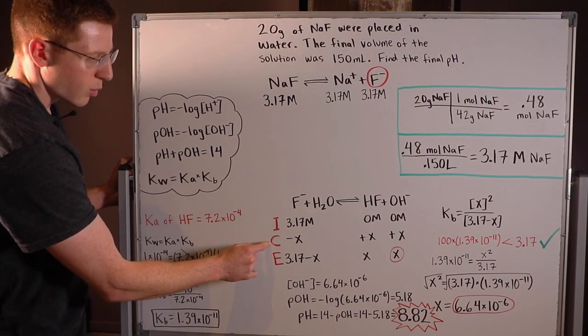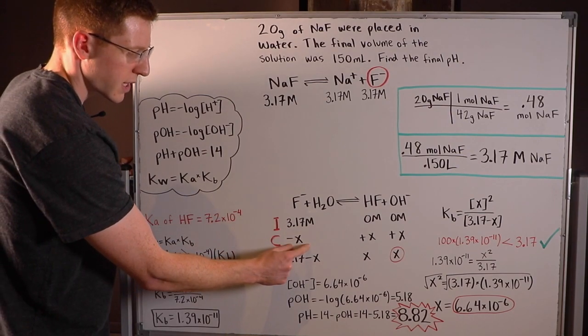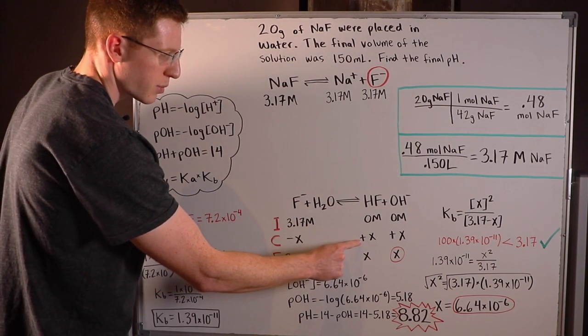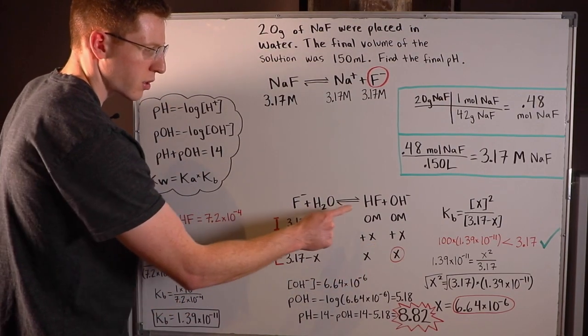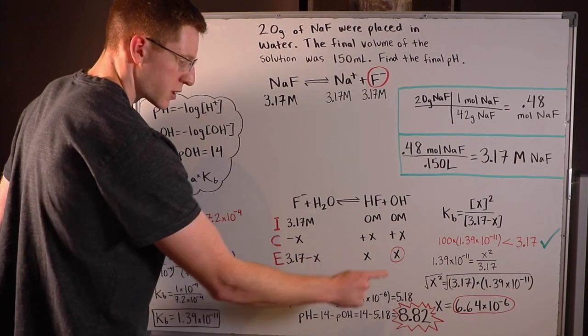My change row always deals with x terms. So since this is a reactant, we have -x here, and these are products, so we have +x and +x, and they all have stoichiometric coefficients of one, so it's just -1x, +1x, and +1x.